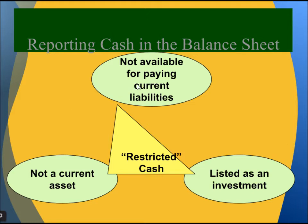How do we report cash on the balance sheet? Some cash is not available for paying current liabilities — this is restricted cash. Restricted cash is not always available for paying current liabilities. For example, cash invested in a long-term investment that cannot be liquidated in the short term is restricted cash. It is not a current asset and is listed as an investment.